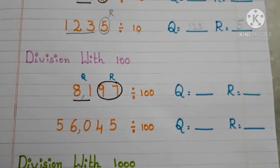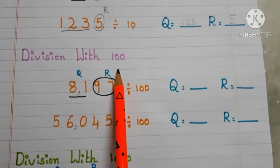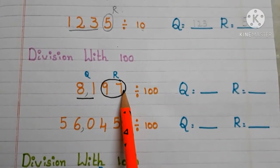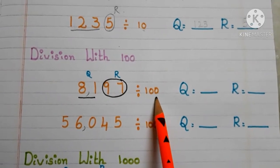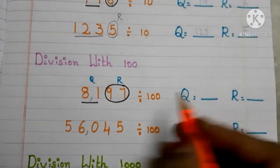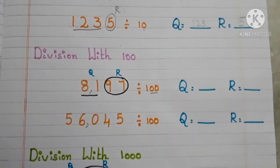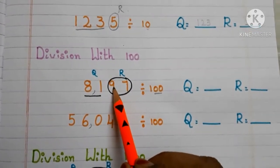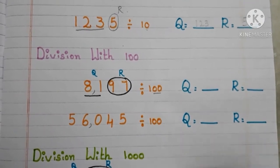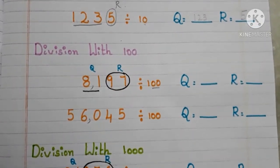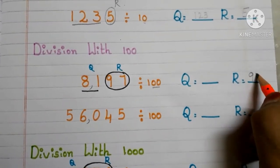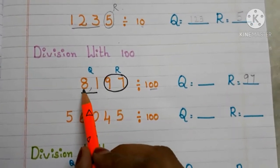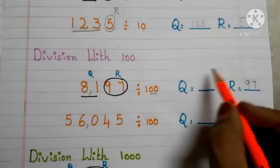Now let us move to division with 100. Here we have our first example: 8197 divided by 100. In 100, how many zeros are there? Two zeros are there. The last two digits — the digits in the one's place and ten's place — become the remainder. Here 97 is the remainder. The remaining digits become the quotient. Here 81 is the quotient.